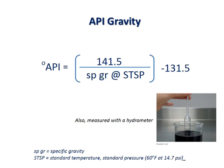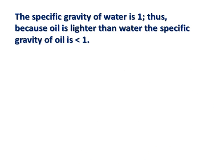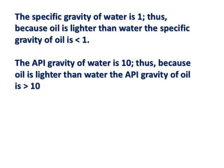We can also measure API gravity with a hydrometer. In fact, lease operators typically measure the API gravity of the oil being produced from a well every morning. The specific gravity of water is equal to 1. Thus, because oil is lighter than water, the specific gravity of oil is usually less than 1. The API gravity of water is 10.